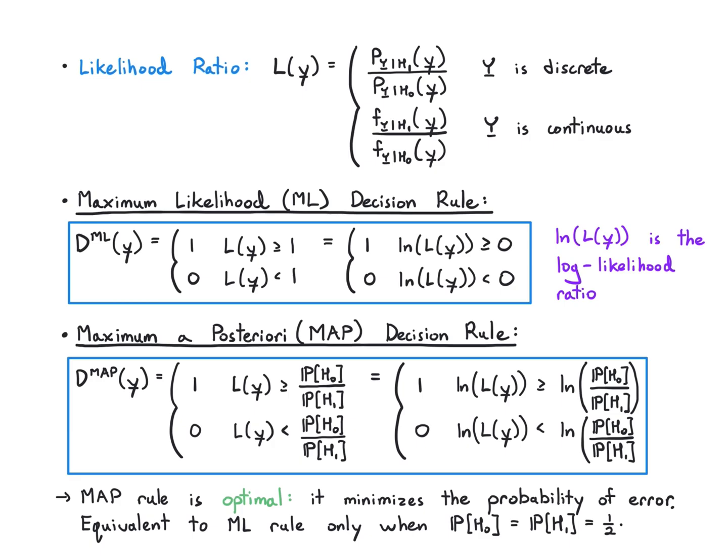I'm now going to work out an example to try to give you some geometry for what these vector decision rules look like. So we'll say that I either have a Gaussian vector with mean mu zero or a Gaussian vector with mean mu one under either hypothesis.